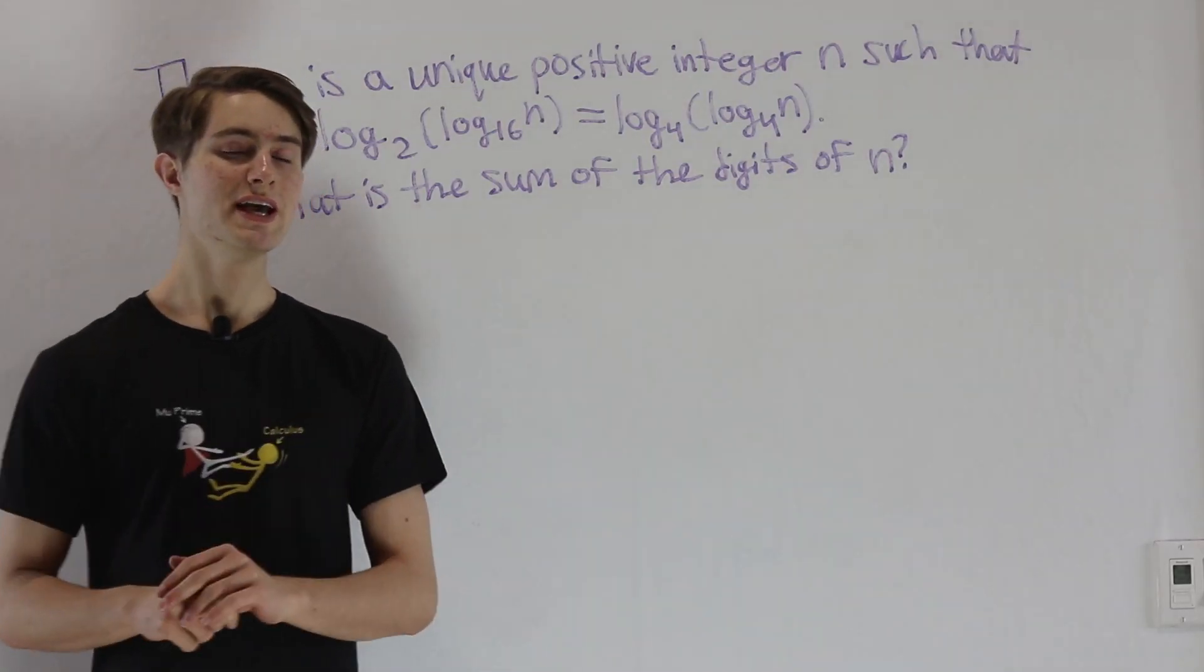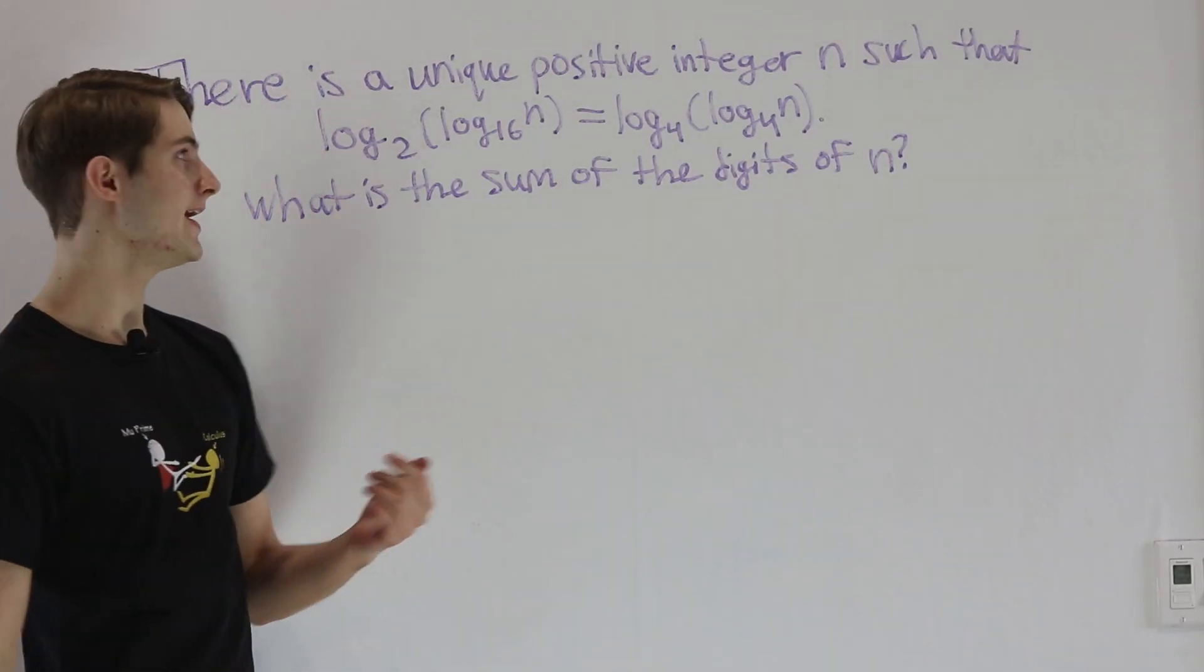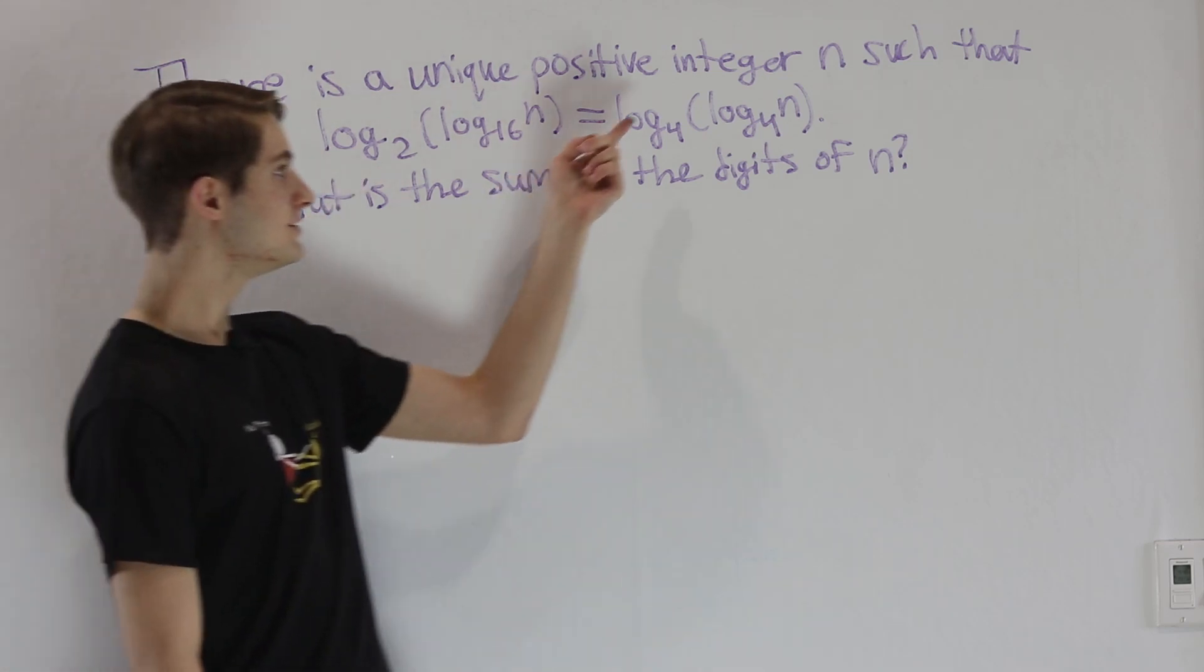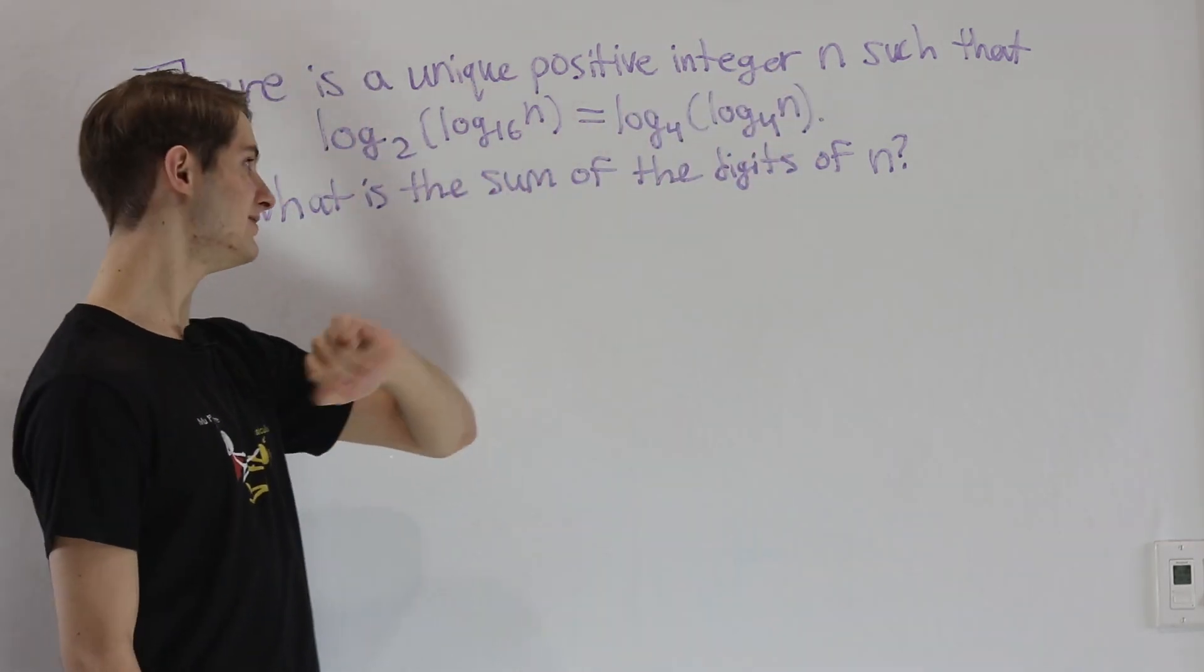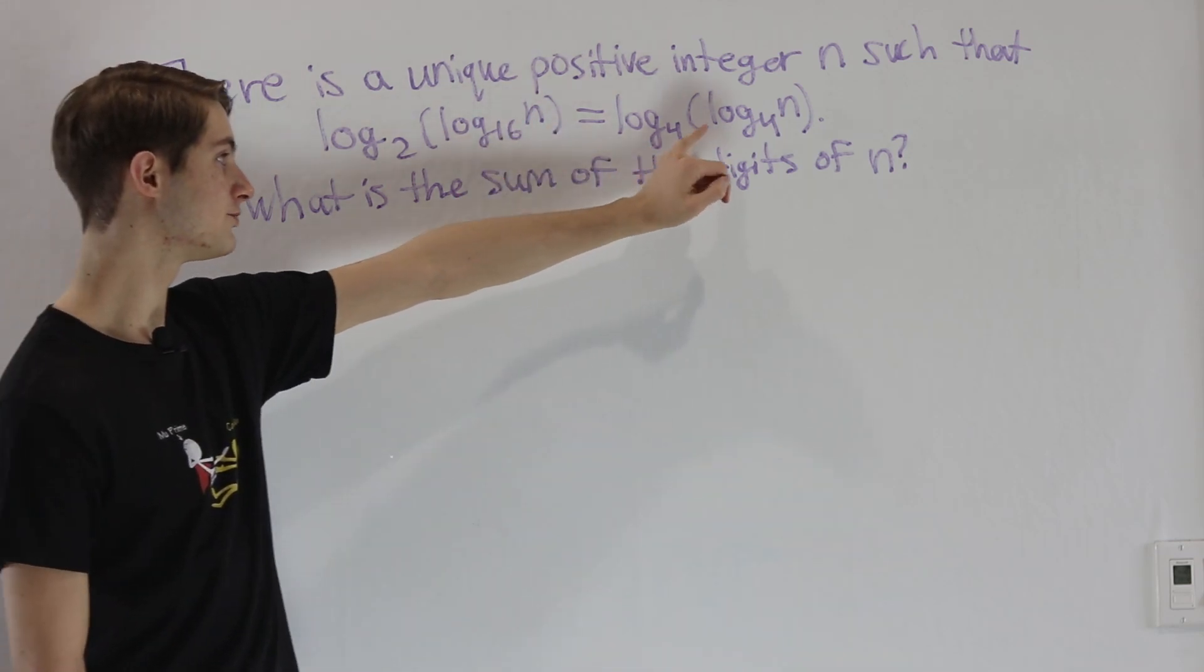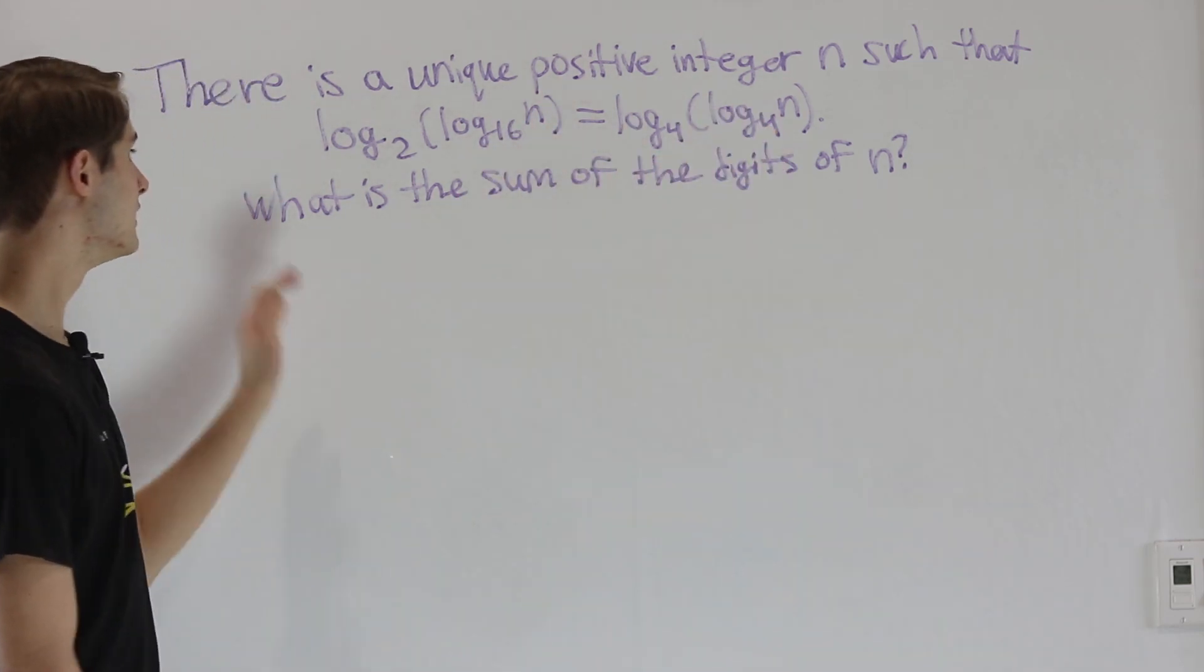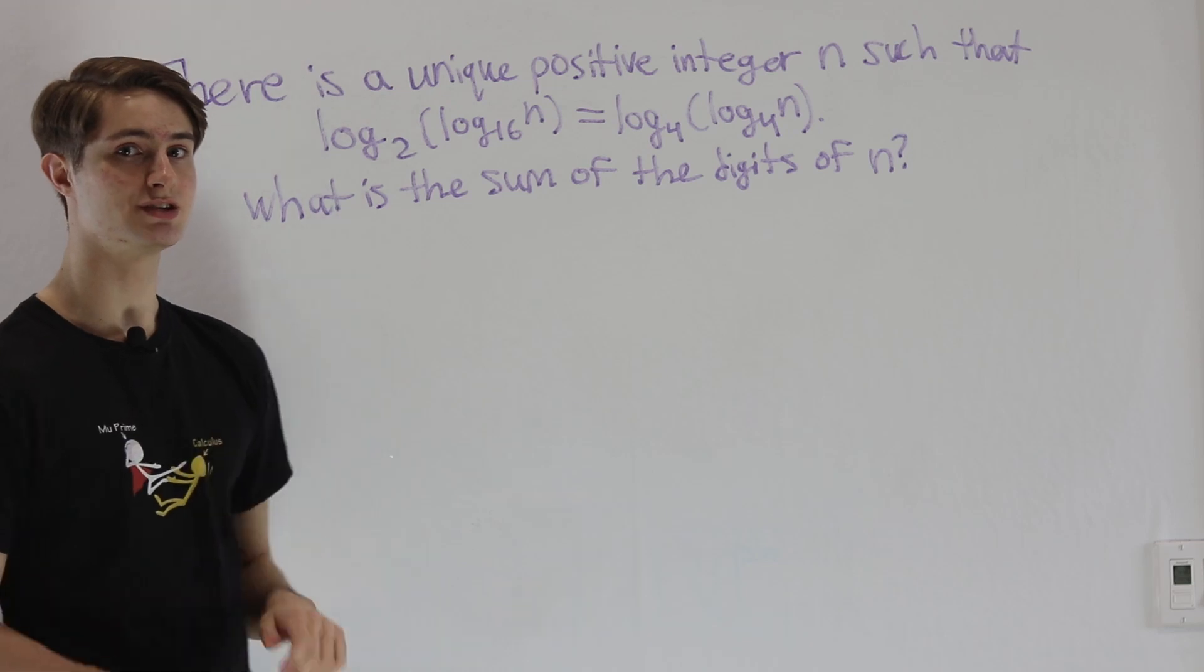We are going to do the 2020 AMC 12a problem 10. There is a unique positive integer n such that log base 2 of log base 16 of n equals log base 4 of log base 4 of n. What is the sum of the digits of n?